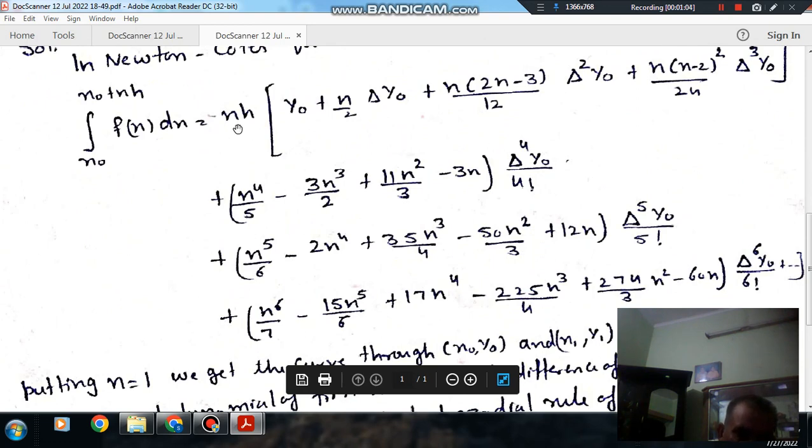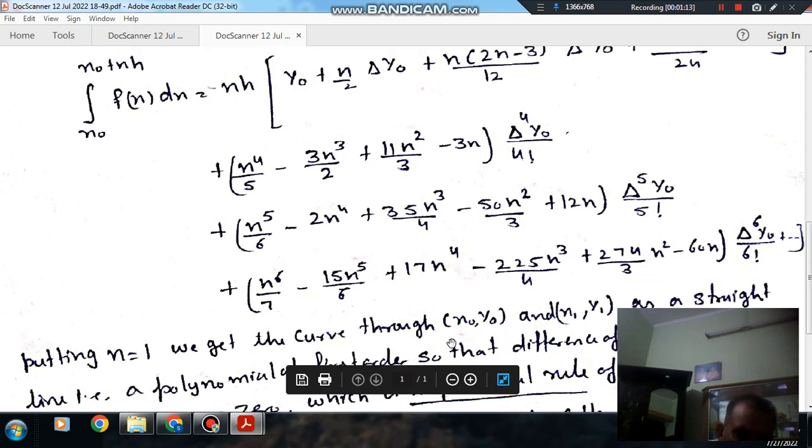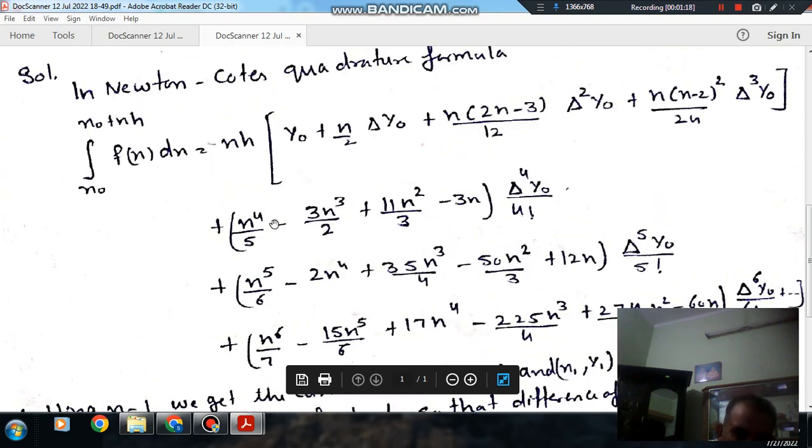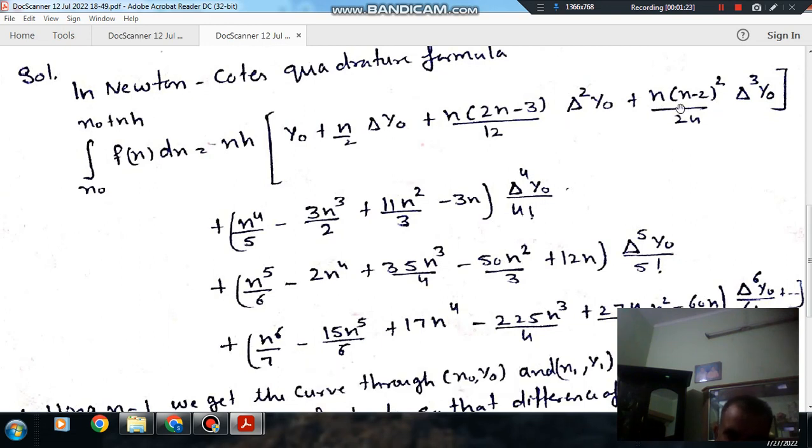So here n represents the order. If you put n in this formula, n equals 1, then the curve through (x0, y0) and (x1, y1) will be a straight line. So that this will remain there, but n square term will cancel out. It will vanish.